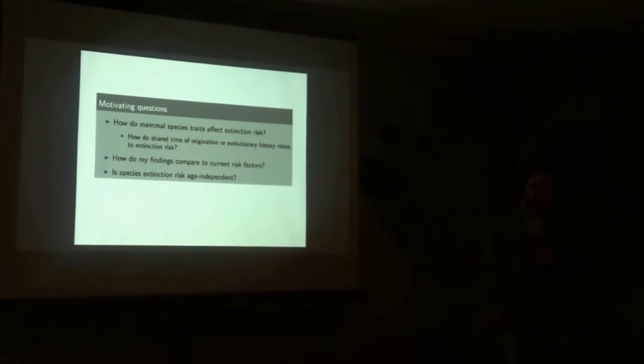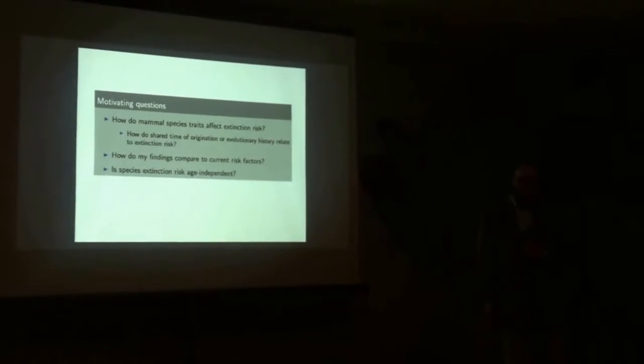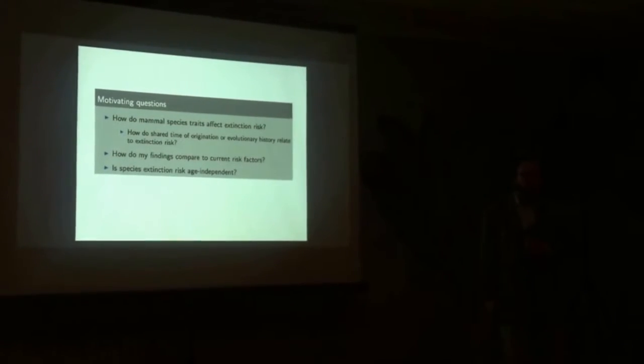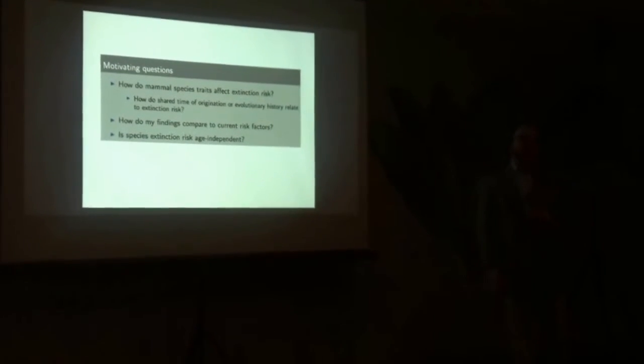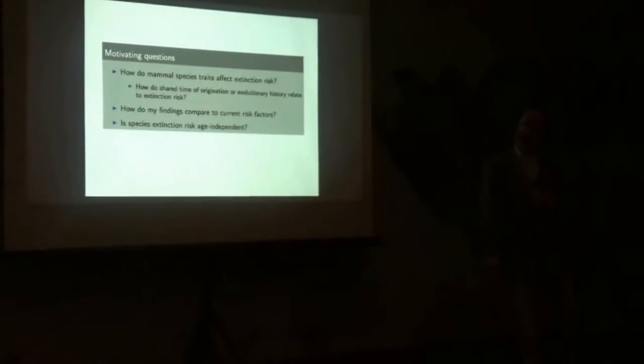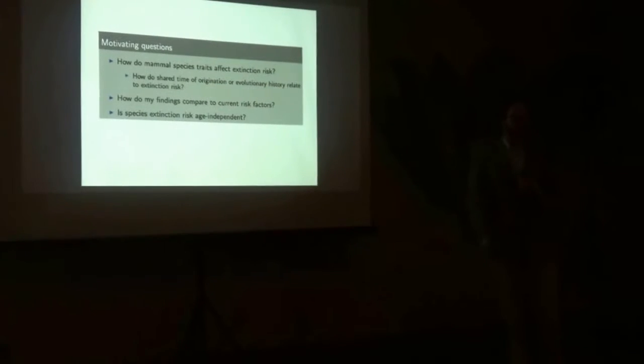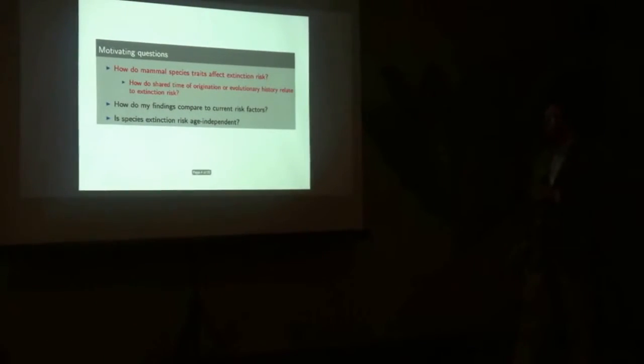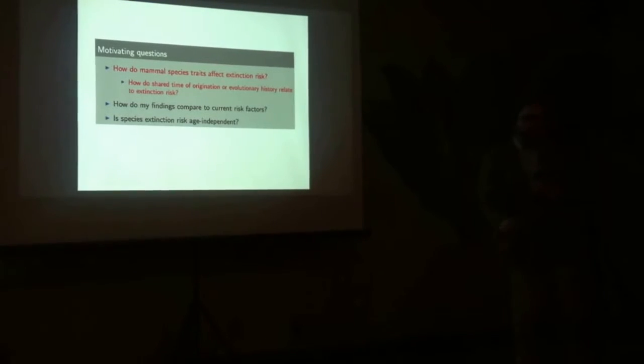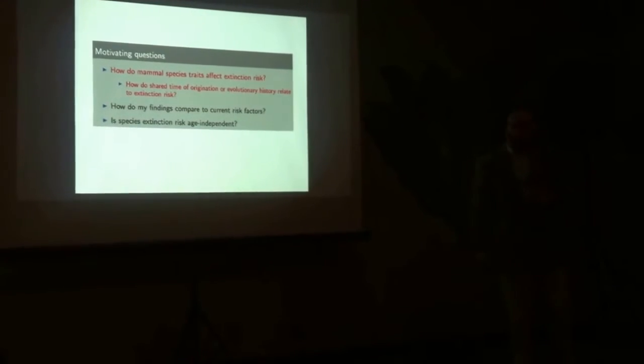A big question coming out of the 70s from Leigh Van Valen's work—the Red Queen paper was actually called a new evolutionary law—was about the law of constant extinction. And it's from there we have the assumption that species extinction risk is age-independent, that it's a memoryless process. But really, here I'm just going to be focusing on this ecology question: how does the ecology of individual organisms affect the extinction risk of that species?